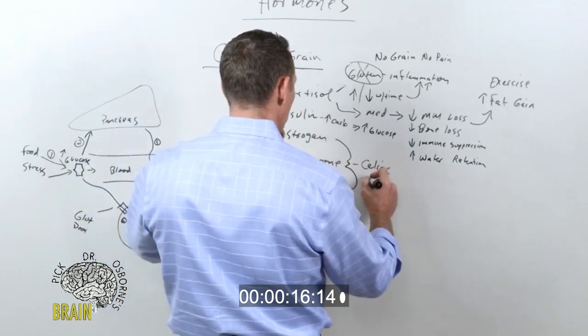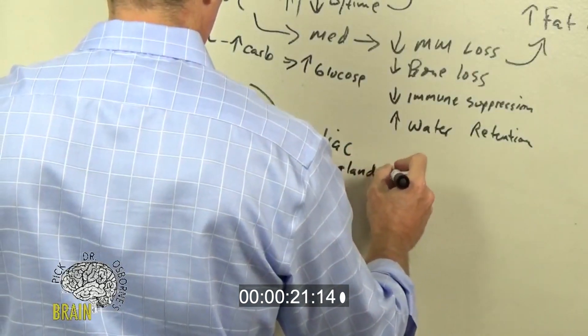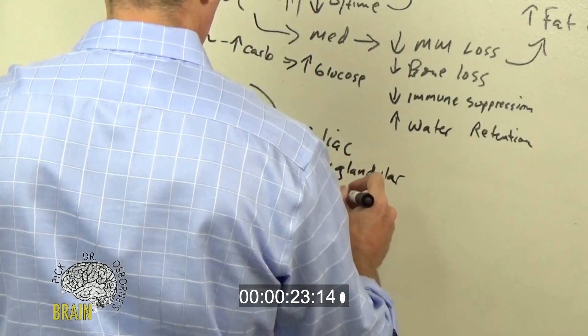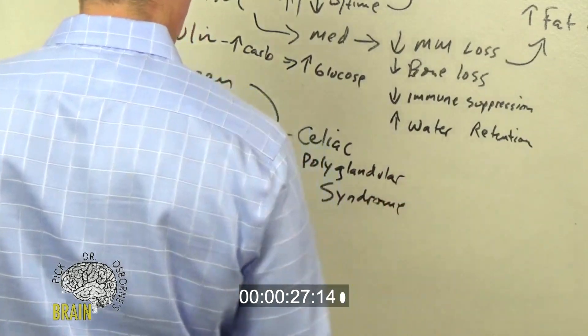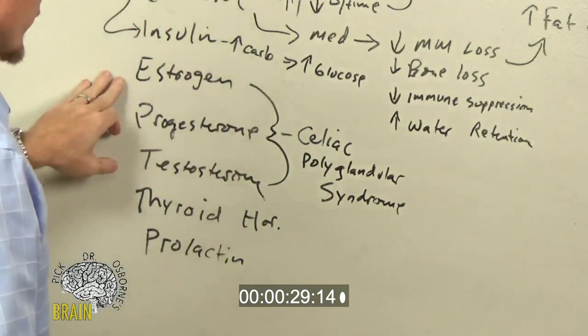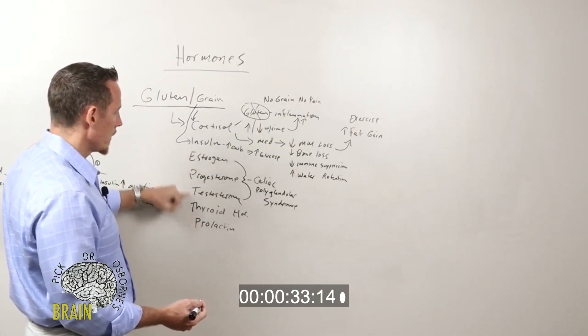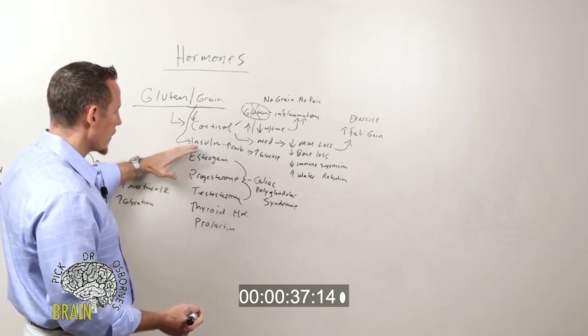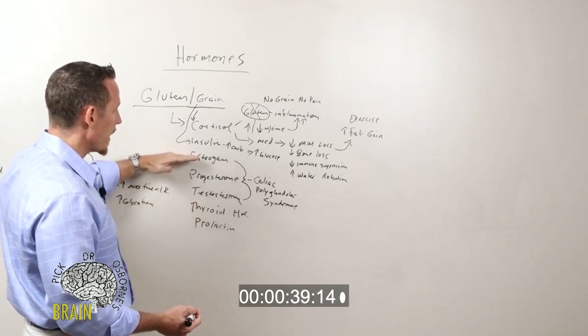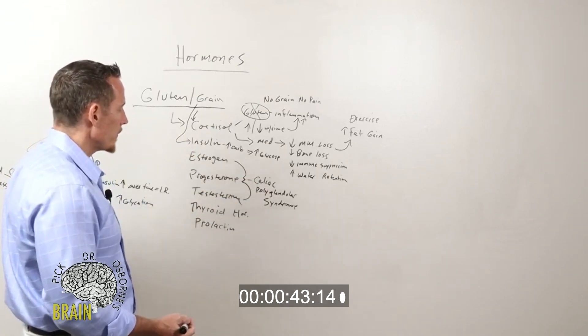We actually see in the literature something that's sometimes referred to as polyglandular syndrome, meaning that many of the different glands responsible for producing hormones, including the adrenal glands, the thyroid gland, the ovaries, and the testes in men, these glands can become broken as a result of that gluten inflammatory reactivity.